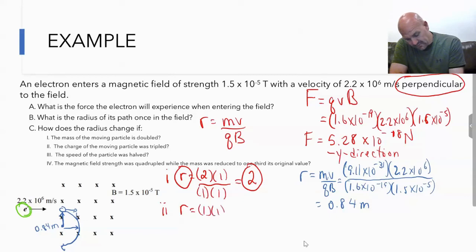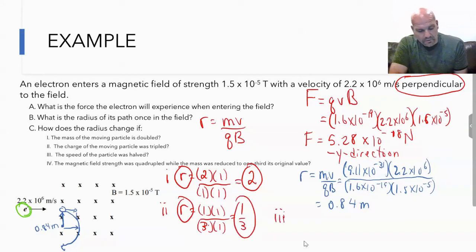What happens if the charge of the moving particle is tripled? Leave the mass alone, speed alone, triple the charge, leave the magnetic field alone. So our radius would decrease by a factor of three.